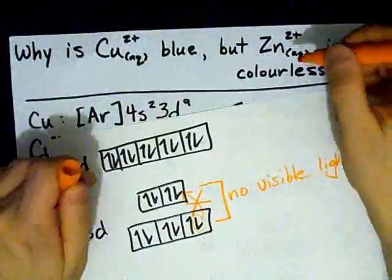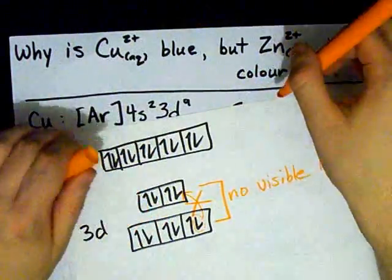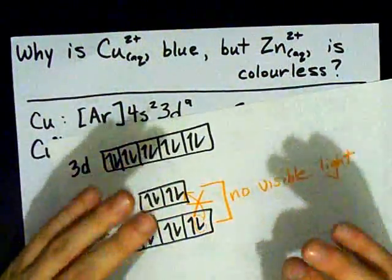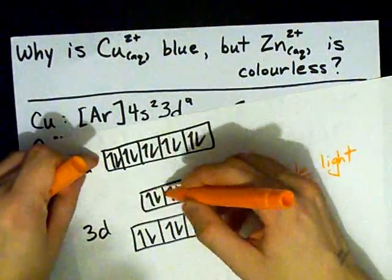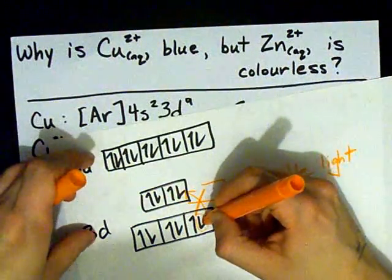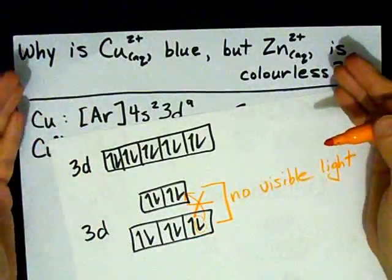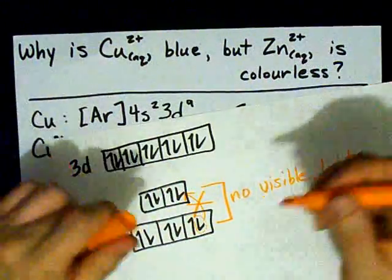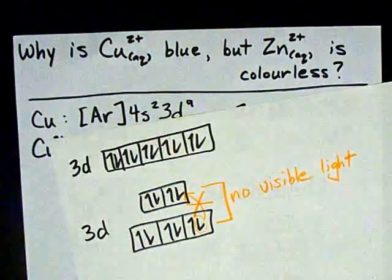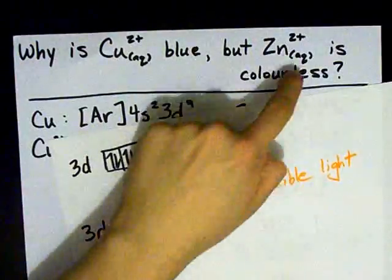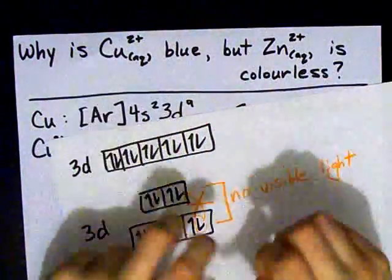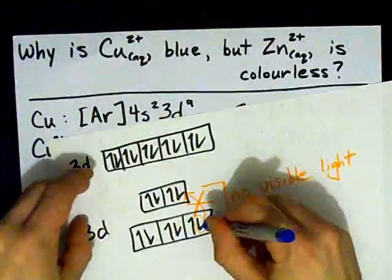Don't get me wrong. Zinc still has ligands, and the D subshell still splits. But because it's full, there's nowhere for electrons to jump to and from. Thus, no visible light from zinc 2+. This is why some people say zinc 2+ isn't even a transition metal. Because it has a full 3D.